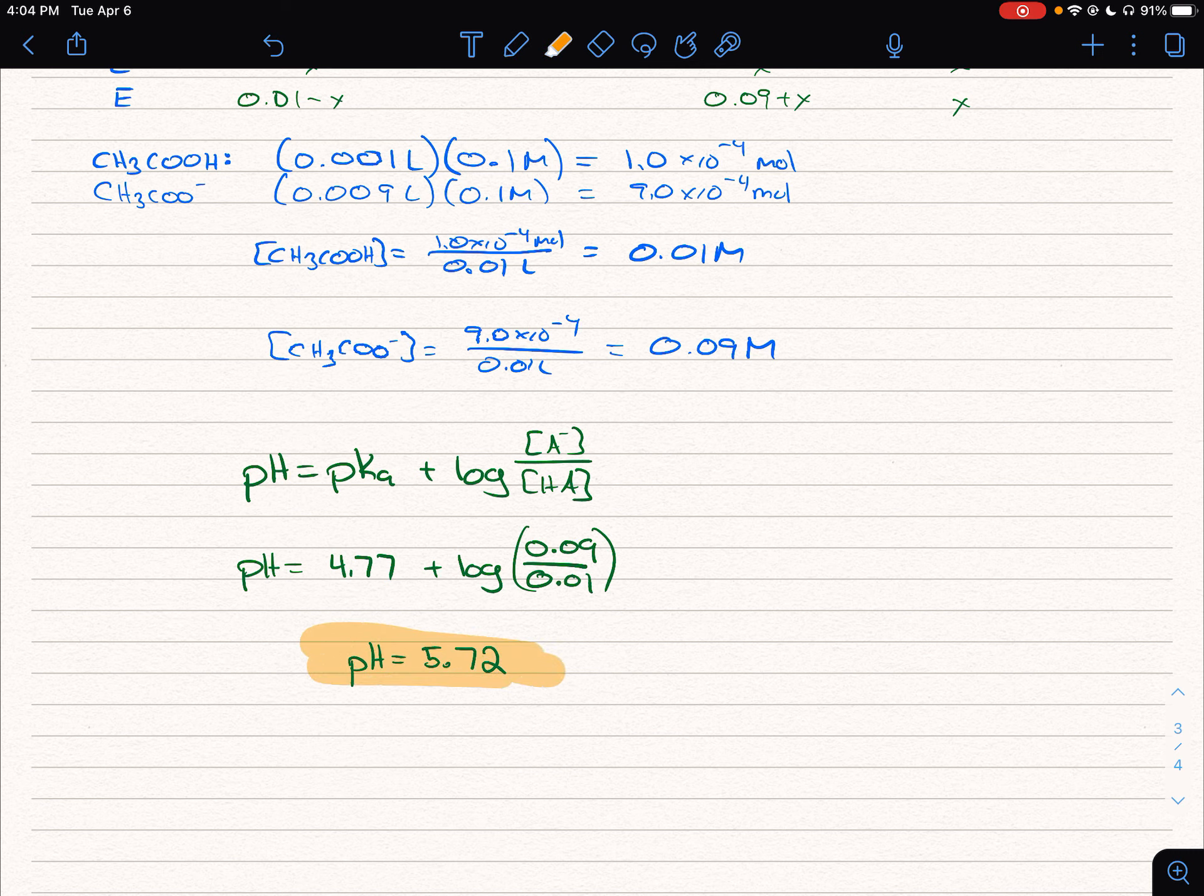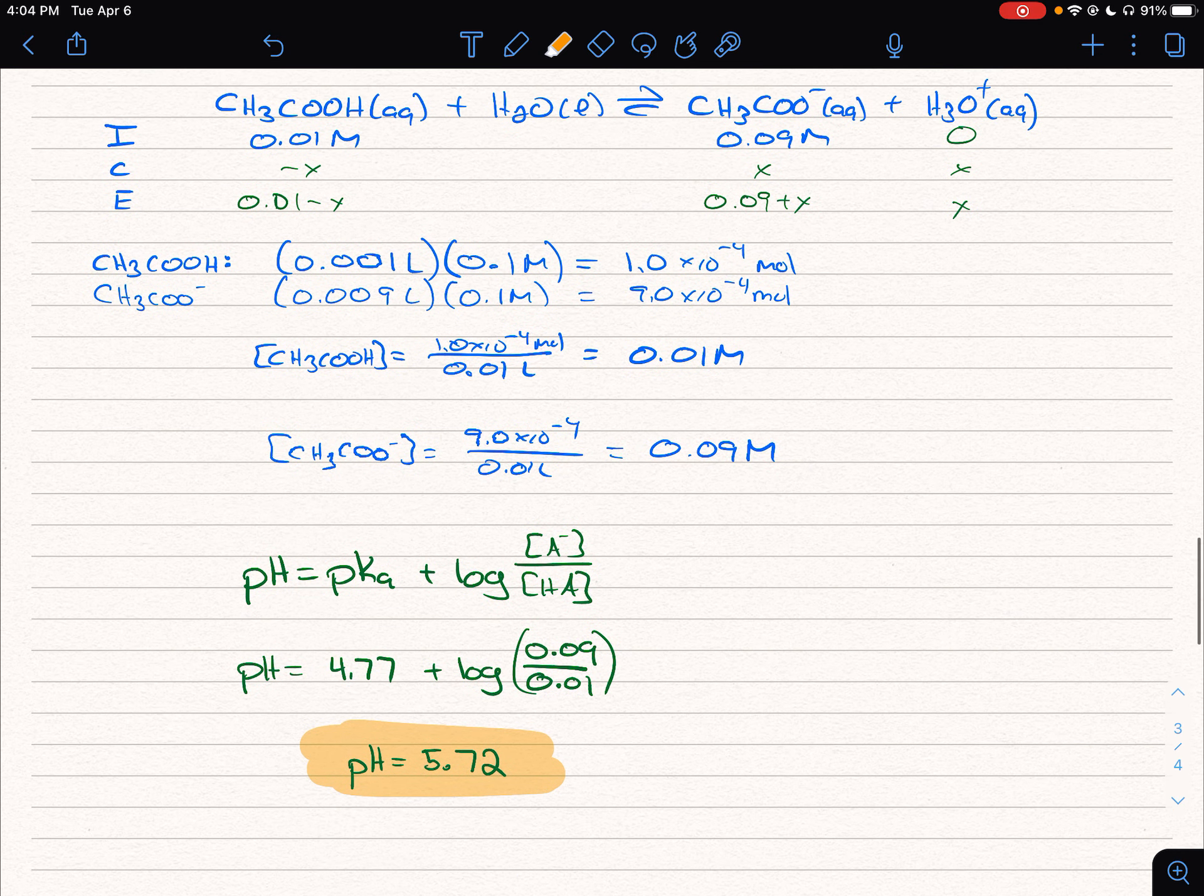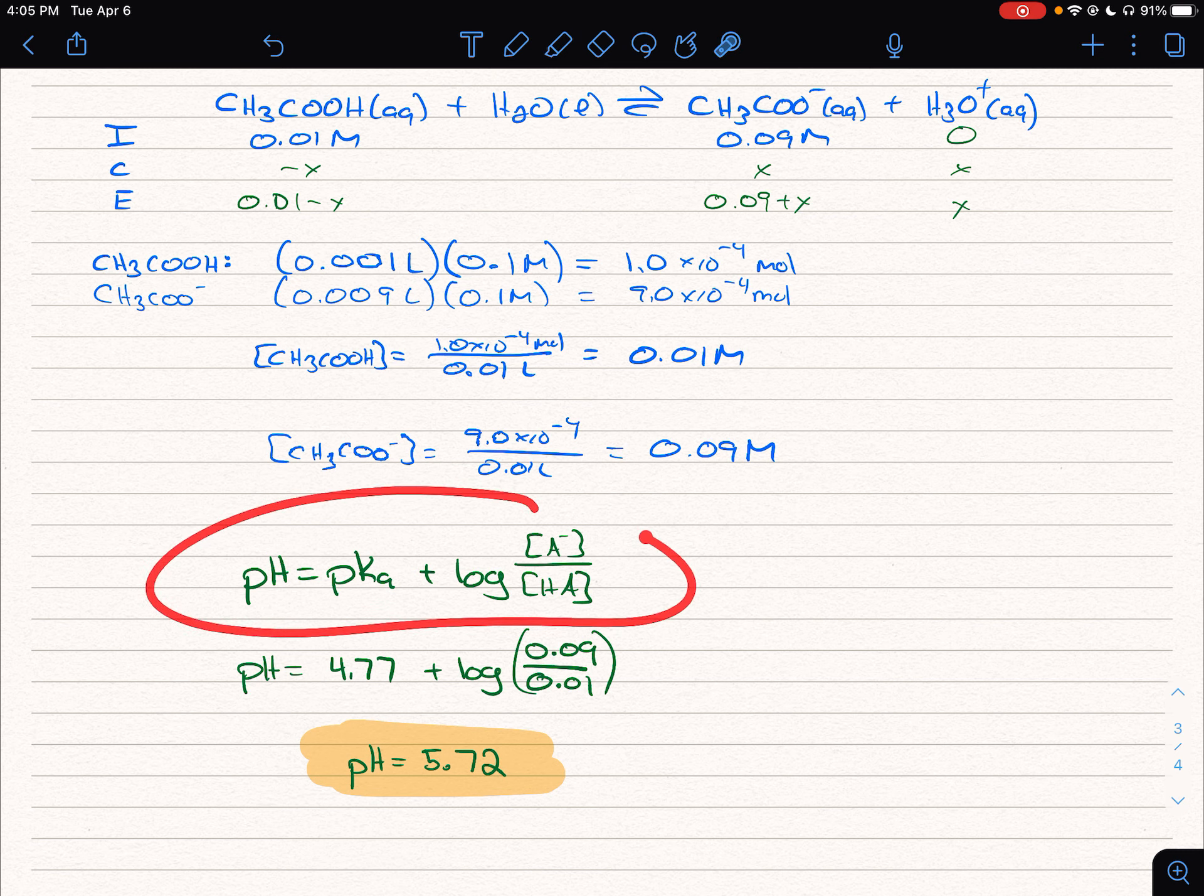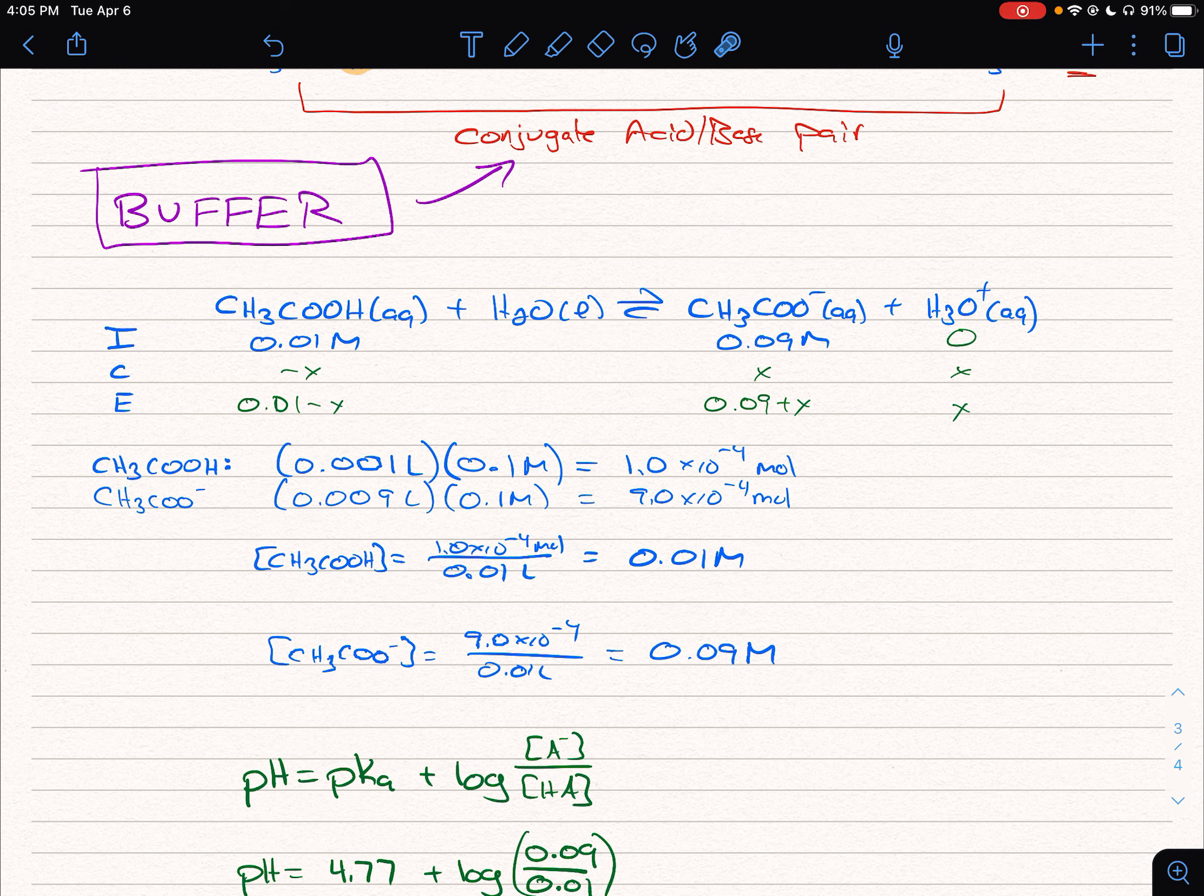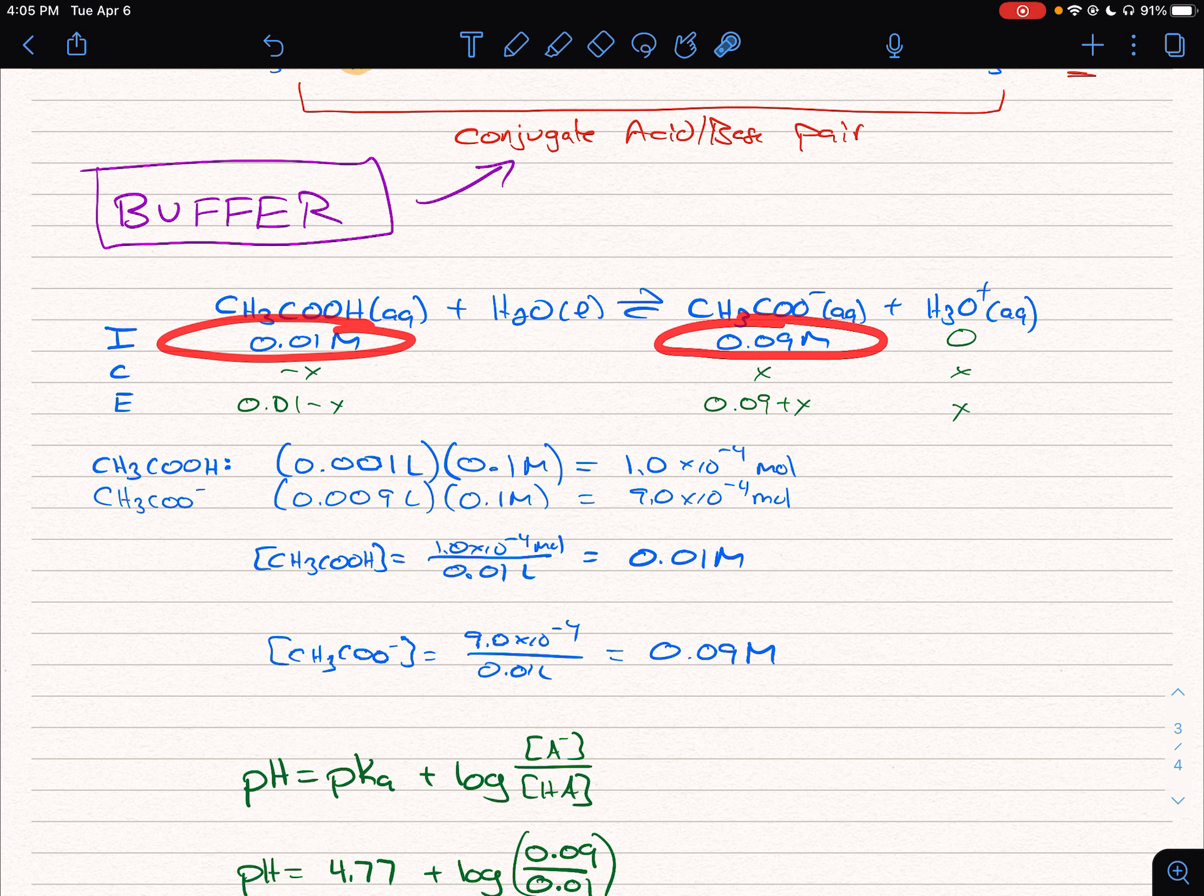And we've bypassed our ICE table and our quadratic and any assumptions by directly using the Henderson-Hasselbalch equation. And again, this equation can save us a lot of time. It's very powerful. But it only works when you have a buffer. And the way you know you have a buffer is when you have both weak acid and its conjugate base both present at the start of the reaction.